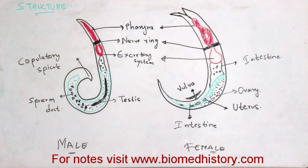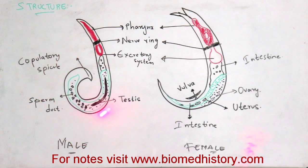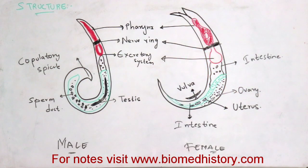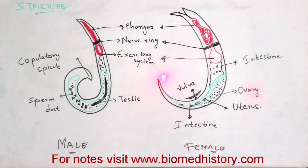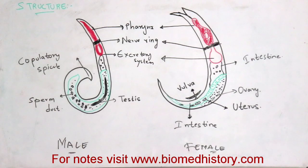The male roundworm has a diameter of 2 to 4 millimeters and a length of 15 to 17 centimeters, and its posterior end is curved. The female roundworm has a diameter of 3 to 6 millimeters and a length of 20 to 25 centimeters, and its posterior end is straight and pointed.